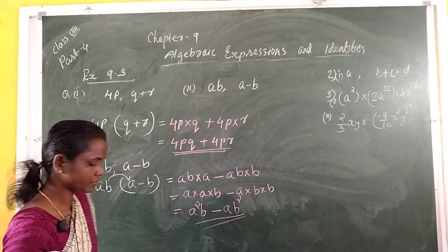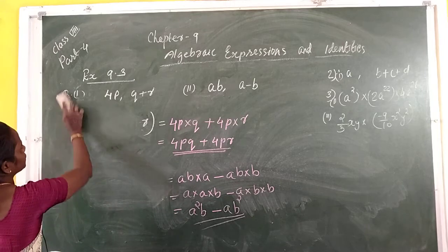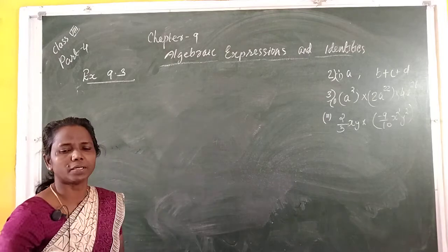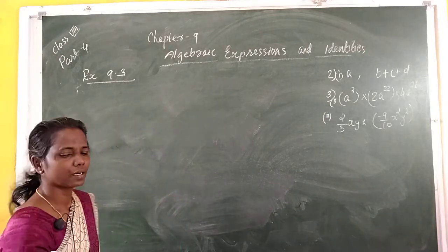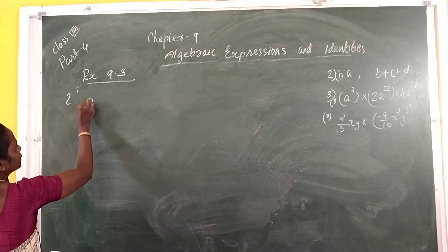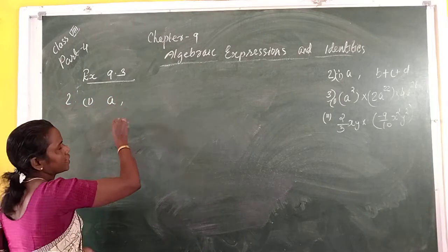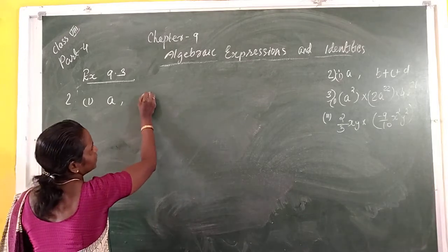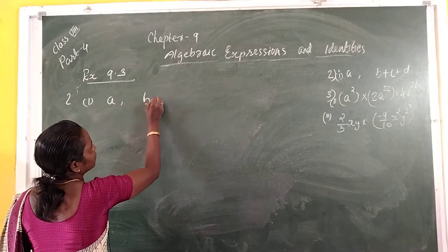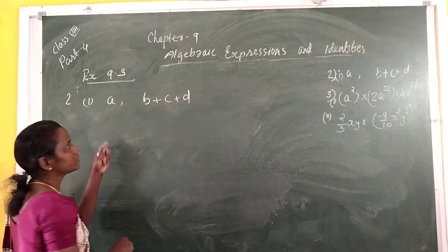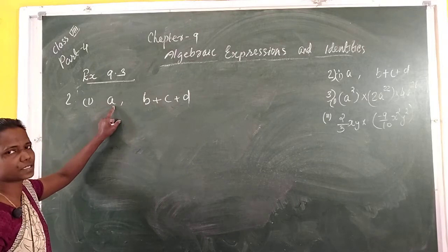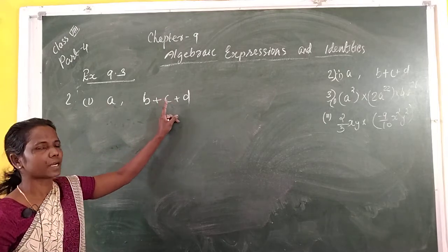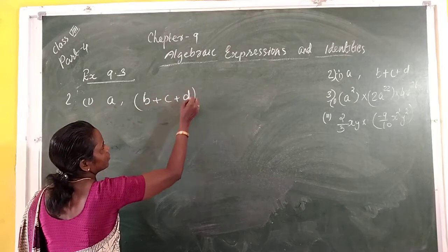Next, question number 2, part A: complete the table. The second expression is A, and the second expression is B plus C plus D. Here A is the first expression — a monomial — multiplied by B plus C plus D, which has three terms, so it is a trinomial. This is monomial multiplied by trinomial.